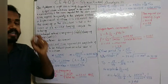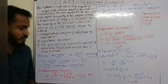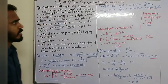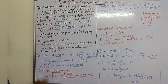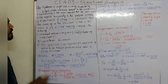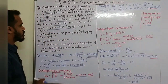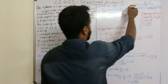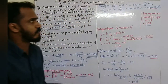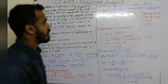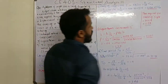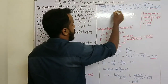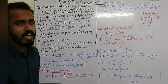Omega n, the undamped natural frequency, is equal to 33.01 radians per second. The damping coefficient c is estimated at 5 percent of critical damping. c is equal to 5 by 100 into c critical, where the critical damping expression is c_cr equal to 2m times omega n.